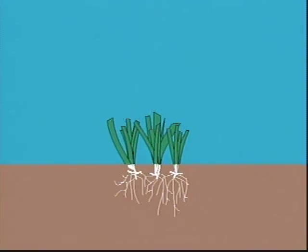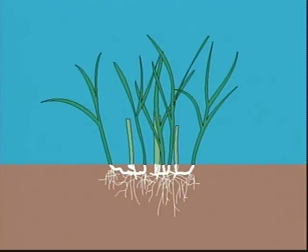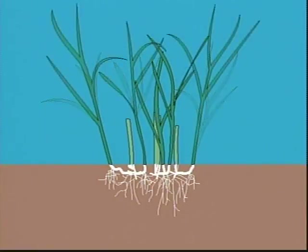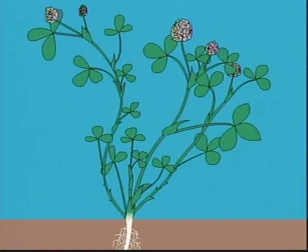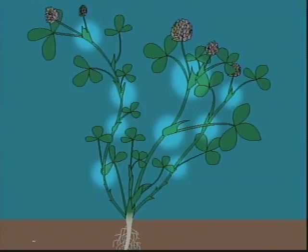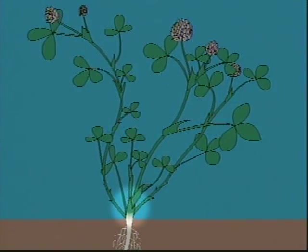New grass tillers can also originate from buds on spreading underground root-like shoots called rhizomes of some pasture grasses. These satellite or daughter plants also contribute to a greater tiller density. The growing points of pasture legumes are also on individual shoots. In addition to the buds at the stem tip and at each leaf stem junction, many legumes also have dormant buds at the stem base or crown of the plant.